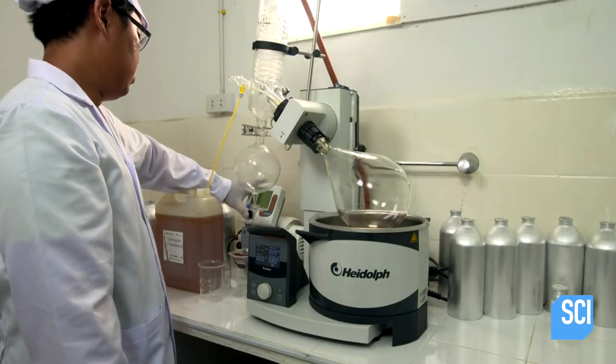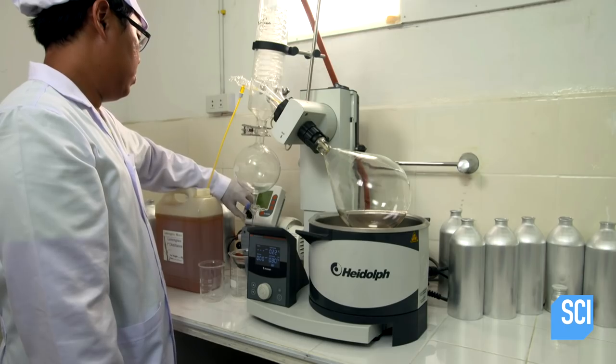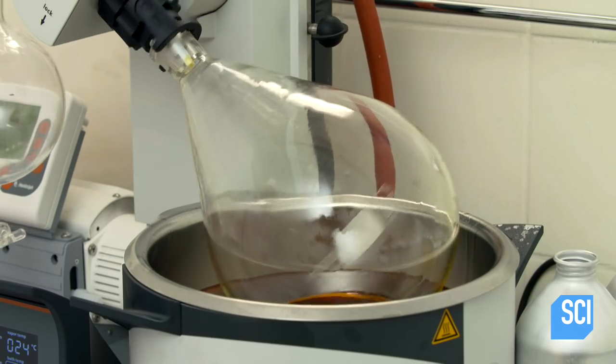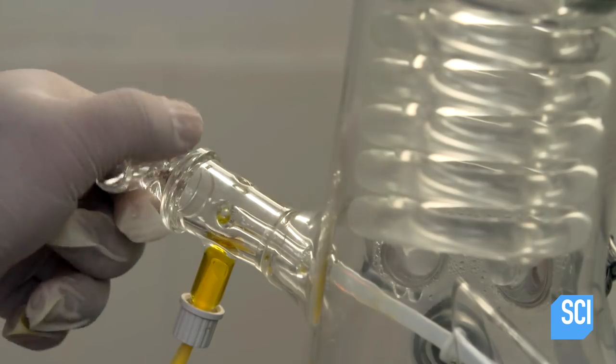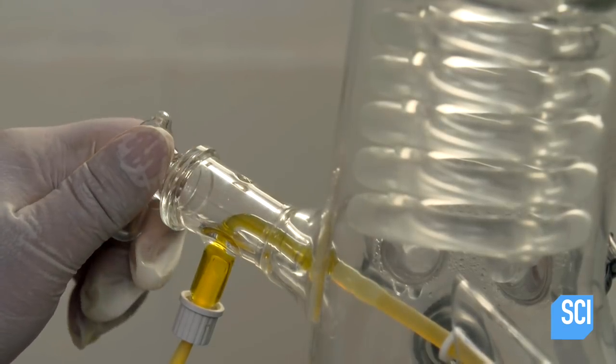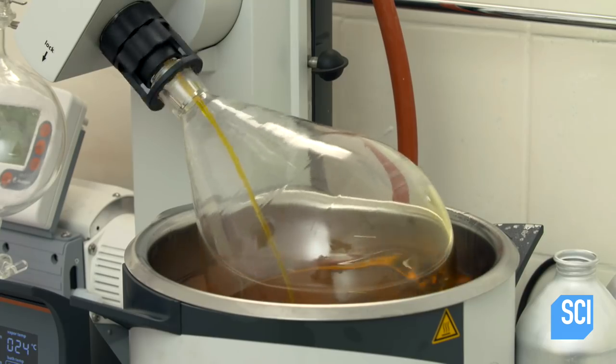The lemongrass oil undergoes a second distillation in a laboratory, using a more sensitive piece of equipment known as a rotary vacuum evaporator. The oil flows into a flask that's spinning in a hot bath of vegetable oil.